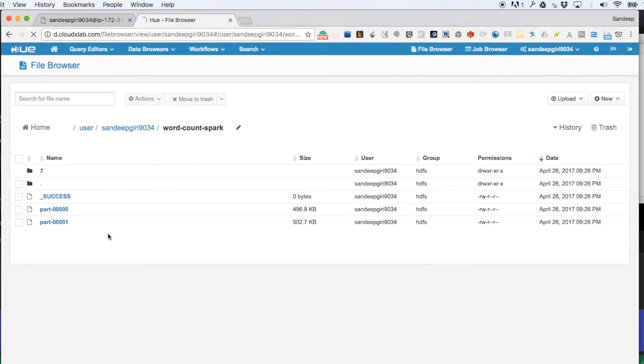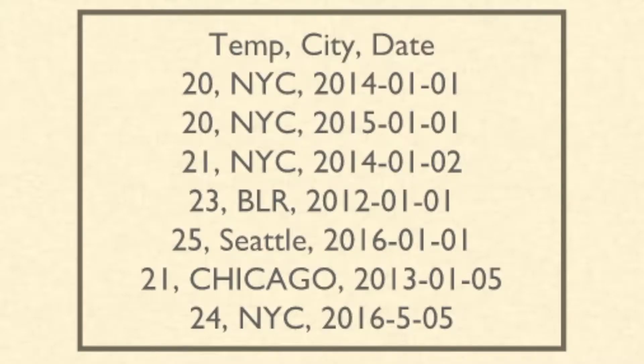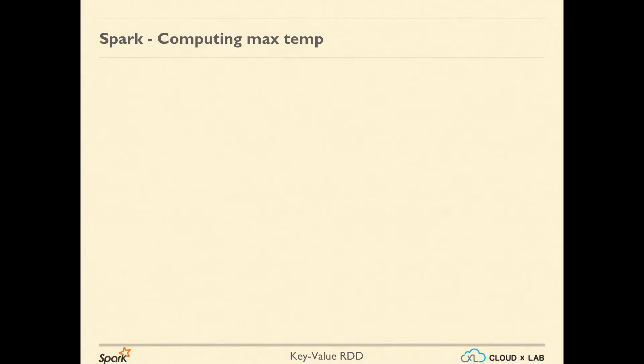The folder contains files for each partition of RDD on which we called saveAsTextFile. Let's take an example of how to compute maximum temperature for each city given the temperature of cities on various dates. We basically need to use reduceByKey with max as the function, but for that we need to prepare proper key-value RDD where key is the city and the value is the temperature.